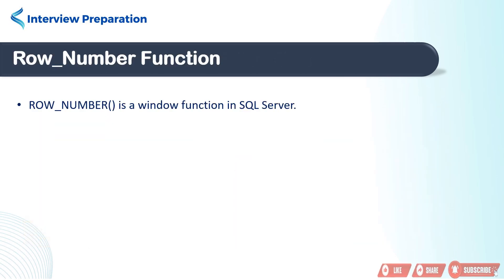Friends, ROW_NUMBER is a window function in SQL Server. It assigns a unique sequential integer to each row within a result set like 1, 2, 3, and so on, and basically it is used for ranking.